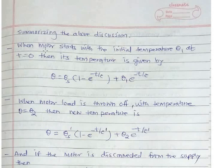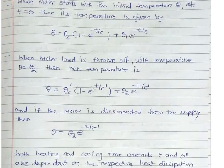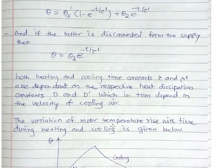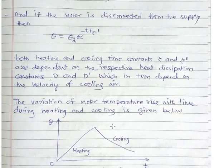Summarizing the above discussion: when the motor starts with initial temperature theta 1 at T equals 0, its temperature is given by the heating expression. When the motor load is thrown off with temperature theta equals theta 2, the new temperature is given by the cooling expression. If the motor is disconnected from the supply, theta equals theta 2·e raised to minus T upon tau dash. Both heating and cooling time constants, tau and tau dash, are dependent on the respective heat dissipation constants D and D dash, which in turn depend on the velocity of cooling air.